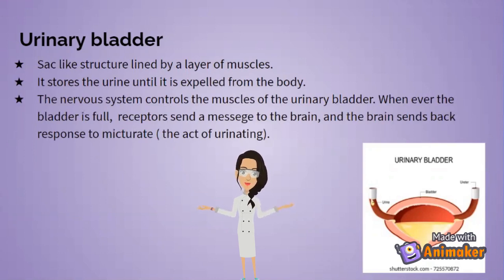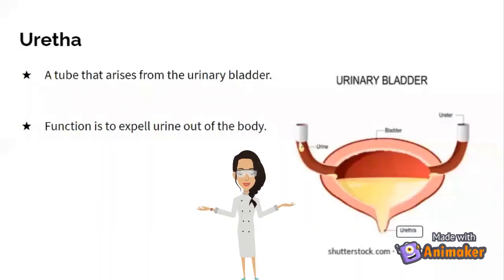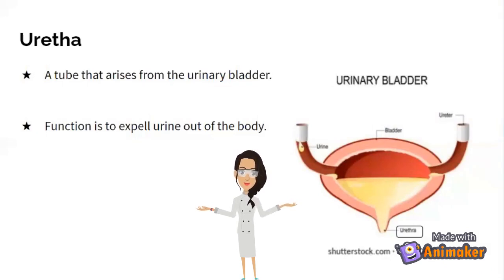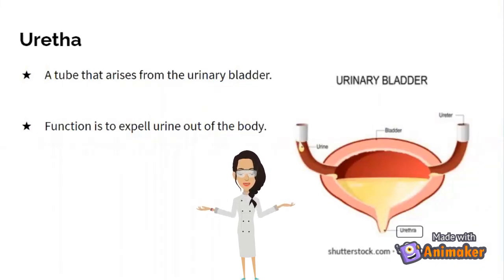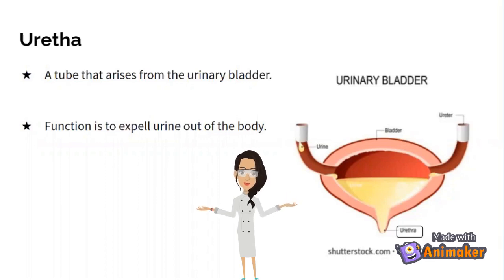Next we'll be learning about the urethra. The urethra is a tube that arises from the urinary bladder and its function is to expel urine out of the body. You can see the urethra in the picture down below.